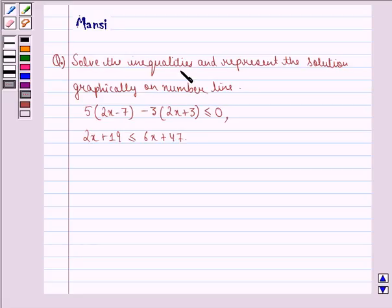solve the inequalities and represent the solution graphically on number line: 5(2x - 7) - 3(2x + 3) ≤ 0 and 2x + 19 ≤ 6x + 47.